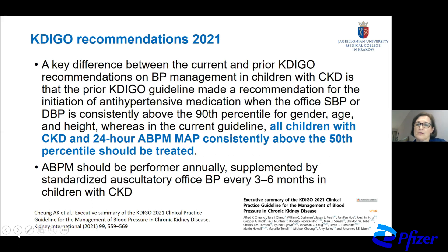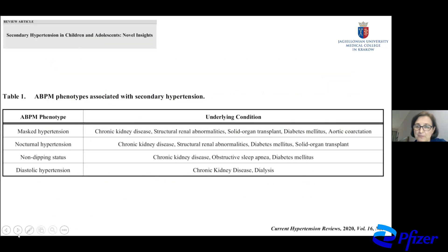We should probably focus more on treatment with diuretics in children with advanced chronic kidney disease. The newest recommendations suggest that all children with CKD and mean arterial pressure on ABPM consistently above the 50th percentile should be treated. So probably we should treat for nephroprotection much earlier than previously.